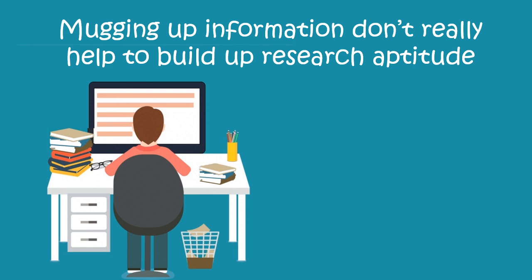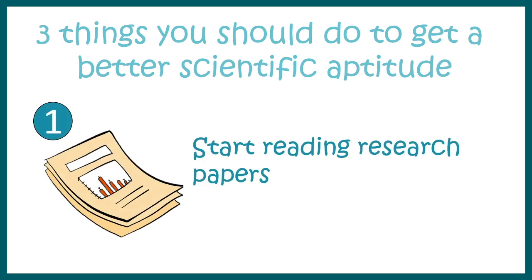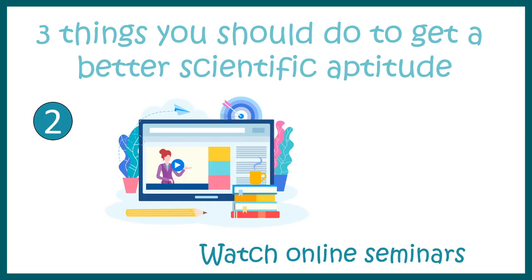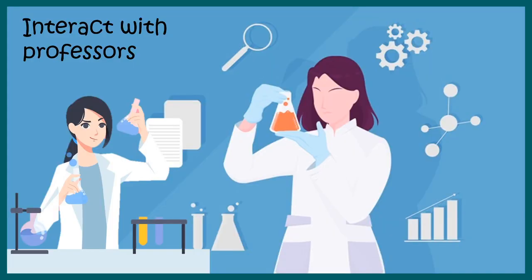Mugging up information doesn't really help in the long run, so you should focus more on building your aptitude than memorizing information. Here are three things to do to develop a better scientific aptitude. First, start reading research articles and research papers right now — this gives you a perspective on what's going on in the field. Second, watch online seminars and get inspired by the stories of real scientists, their work, and how they perceive a problem.